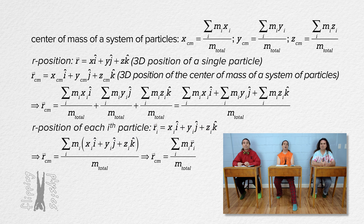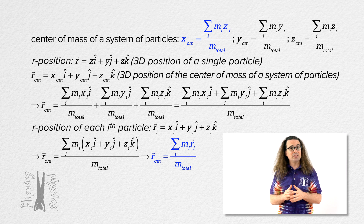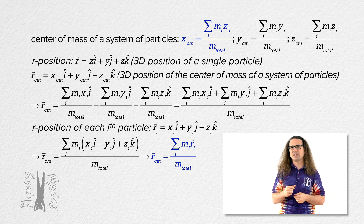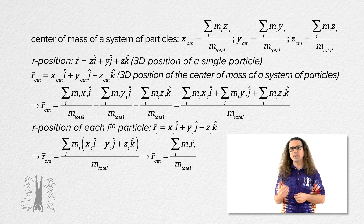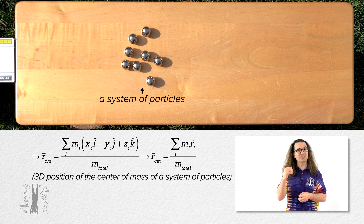But isn't that just the equation we started with for the x-position of the center of mass, and we just replaced x with r? That seems like a lot of work just to replace x with r. I can totally see that perspective. However, please realize that we can now use one equation to identify the position of the center of mass of a system of particles in three-dimensional space.